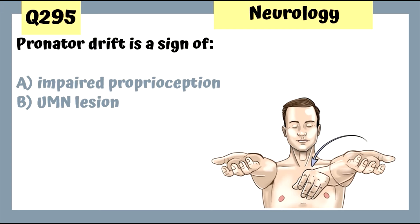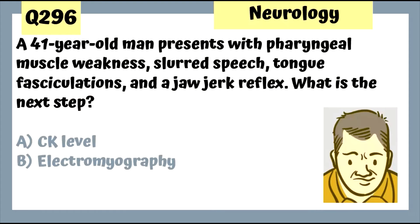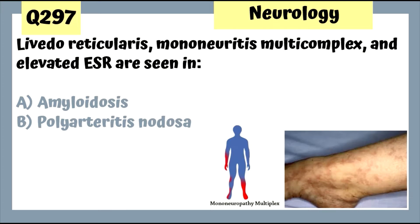Question 295: Clonus is a sign of upper motor neuron lesion. Impaired proprioception can be tested by holding the most distal joint of a digit by its sides and moving it slightly up or down, asking the patient if it's going up or down. Question 296: A 41-year-old man with pharyngeal muscle weakness, slurred speech, tongue fasciculations, and a jaw-jerk reflex — these symptoms are associated with ALS. Electromyography is the next step.